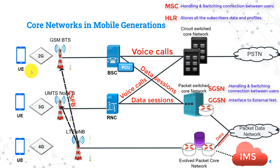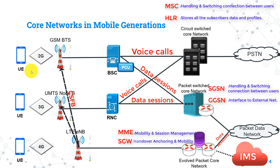The main nodes in the EPC are: MME, Mobility Management Entity, whose main function is mobility and session management of user connections. The second node is S-Gateway, Serving Gateway, used for handover anchoring and mobility management. The third node is PDN Gateway, Packet Data Network Gateway, which manages the interface with external packet data networks like the internet.